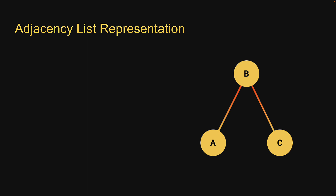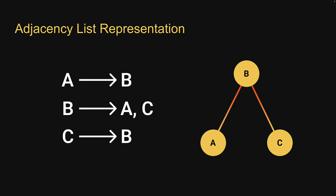Here is a graph and its corresponding adjacency list representation. We have three vertices — a, b, and c — and each vertex maps to a list of adjacent vertices. Considering the graph on the right, a's adjacency list will contain b, b's adjacency list will contain a and c, and c's adjacency list will contain b.